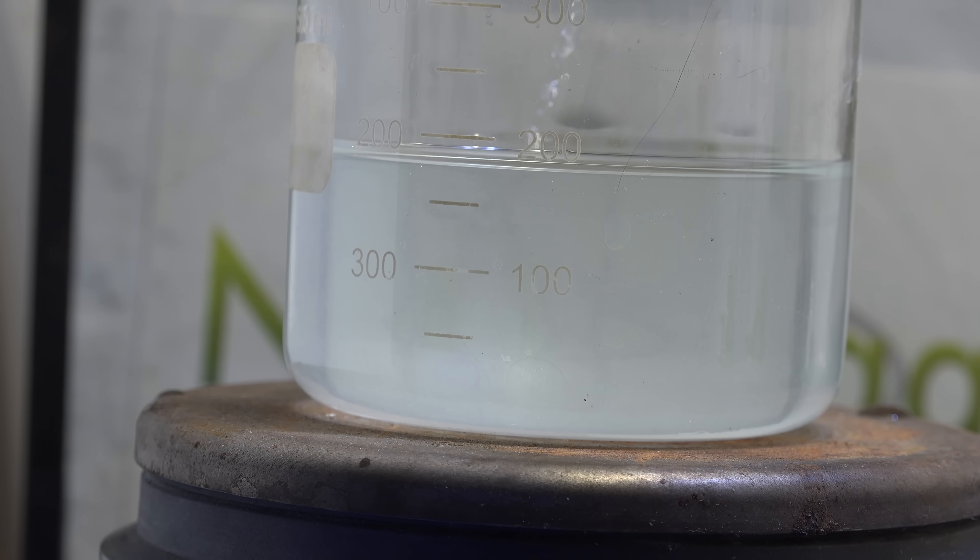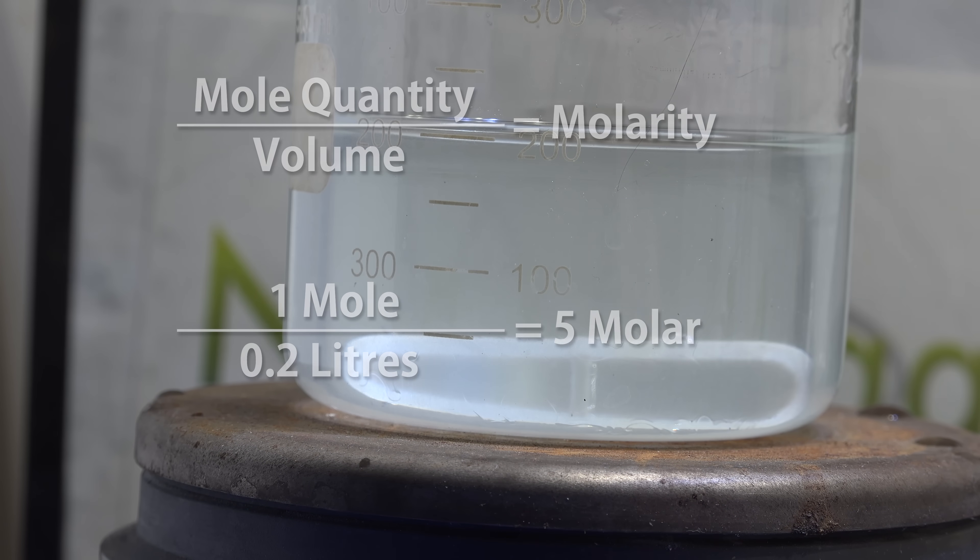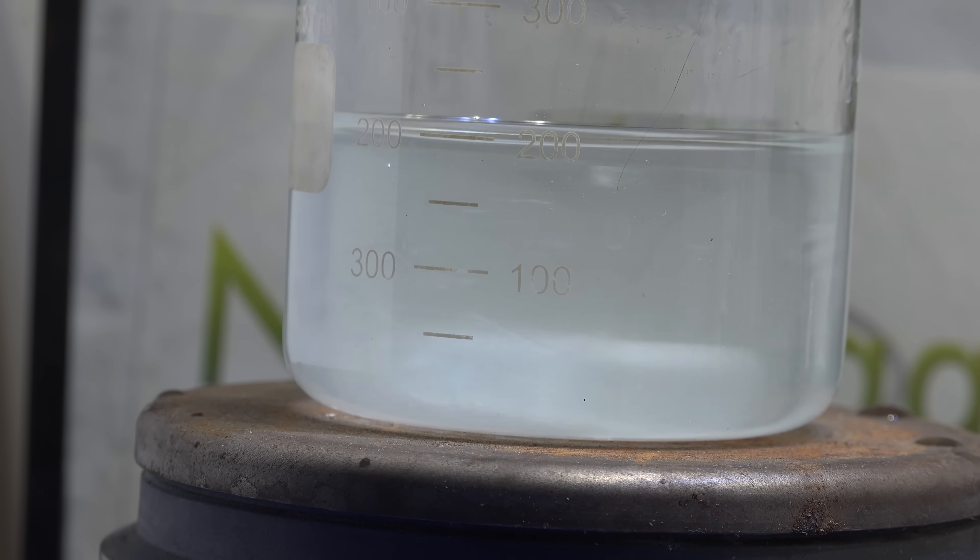To standardize the concentration, top the solution to a known volume and then divide that from the molar quantity to get the molarity. In my case, I'm topping my solution to 200 milliliters of volume. Since I have one mole of sodium silicate, I divide that by 0.2 liters to get the concentration of 5 molar. Be sure to stir your solution to homogenize it.